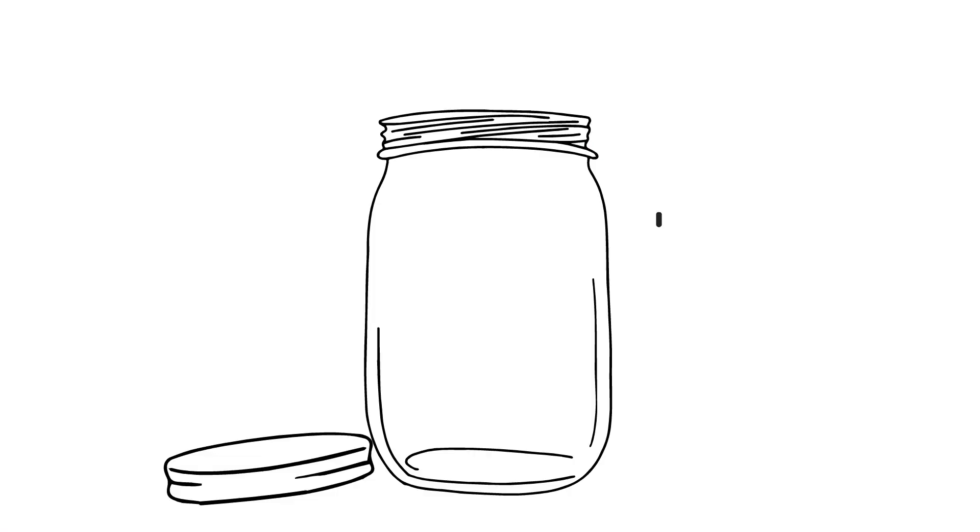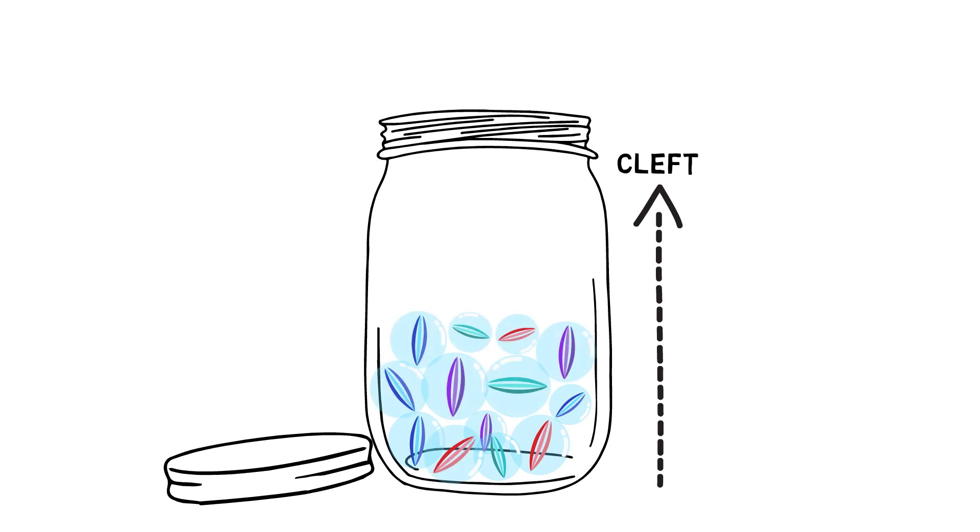We can think of the chance of getting a cleft as being a jar. When a person's jar fills up to the top, they get a cleft, and if the jar doesn't fill up, they don't. The genes that increase the chance of getting a cleft are marbles that sit at the bottom of the jar. Some people have more marbles than others, but very few people have so many marbles that the jar fills up completely.